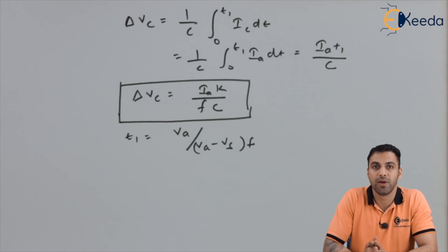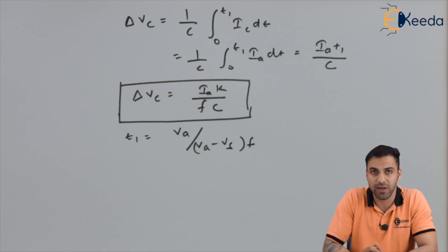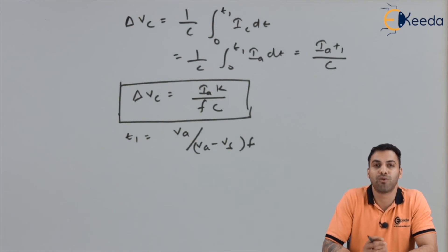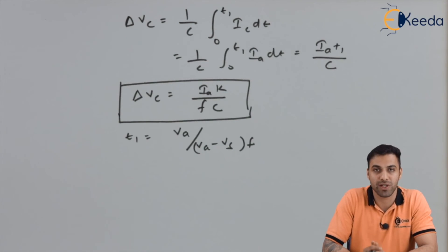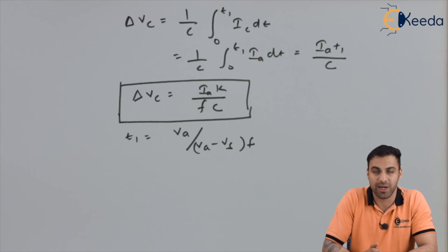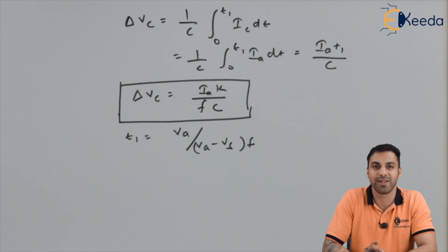Friends, I hope you understood what a buck-boost converter is and how the average output voltage, the peak-to-peak voltage across the capacitor, and the inductor peak-to-peak current are calculated. Thank you so much for watching. Please subscribe to E-Kira and stay tuned. Thank you.